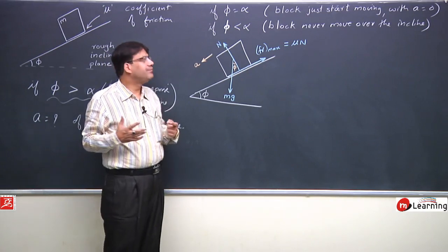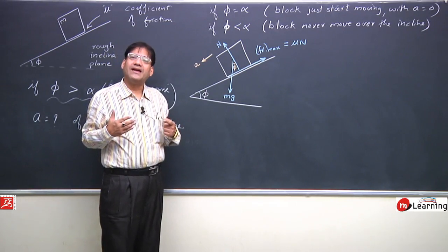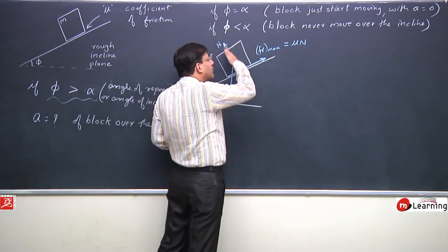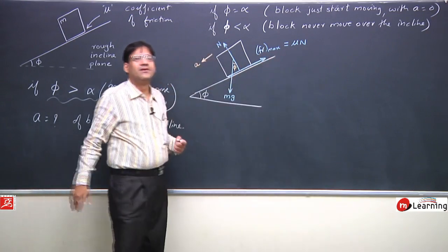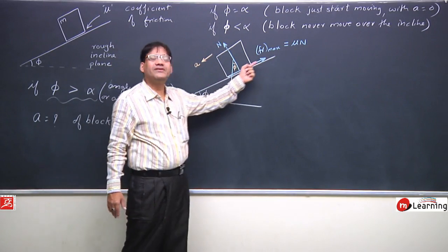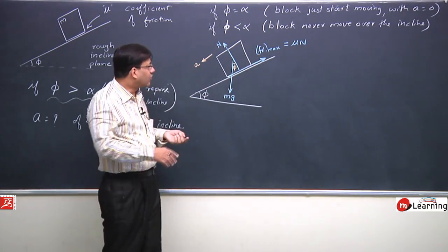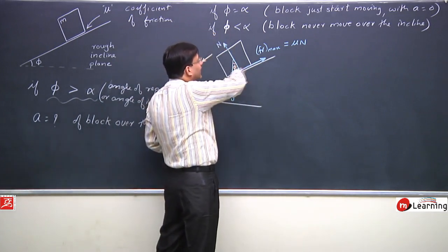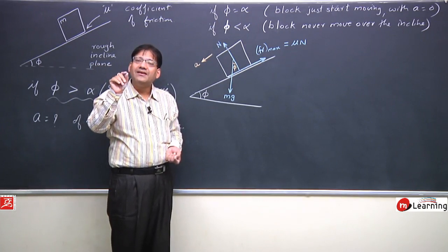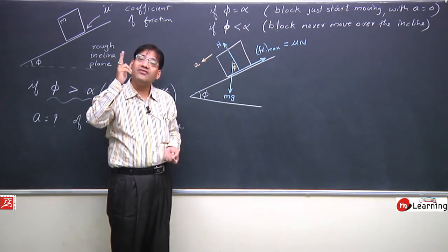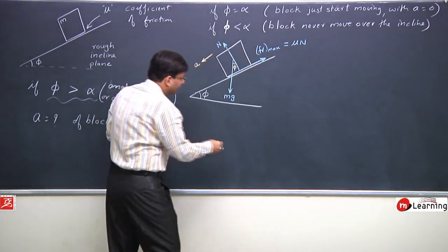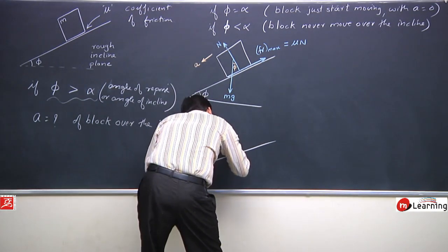To frame the equations, we need to choose coordinate axes. We choose two perpendicular coordinate axes: one perpendicular to the inclined plane and one along the inclined plane. We do not need to resolve the normal reaction since it is already perpendicular to the inclined plane, and friction is already along it. However, the gravitational force mg is neither along nor perpendicular to the incline, so we will resolve it. Let us redraw the free body diagram showing mg resolved into components.